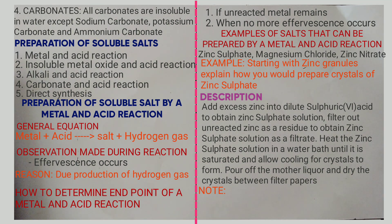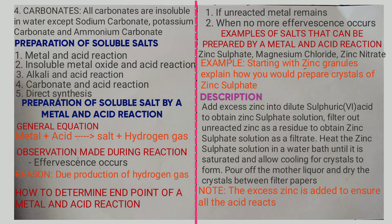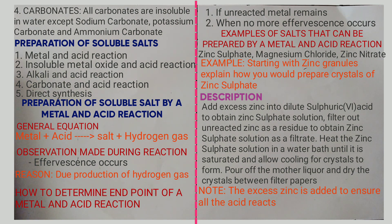Points to note: excess zinc is added to the acid to ensure all the acid reacts. Crystals are dried using filter papers and not by heating, because when heated they lose their water of crystallization. That is the end of the lesson. In the next lesson we will look at how to prepare soluble salts by the other methods mentioned earlier. Thank you.